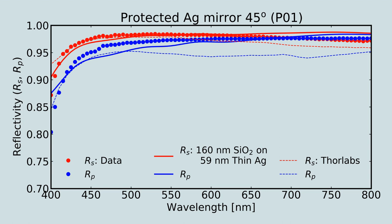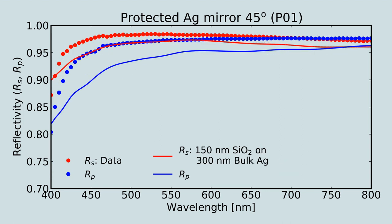Silver is a case in which the modeling results are sensitive to the choice of optical constants. Here's a comparison of the same data to a model adopting bulk silver constants instead of the thin film constants adopted previously. The goodness of fit is significantly degraded.